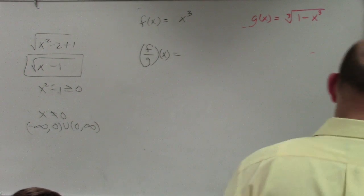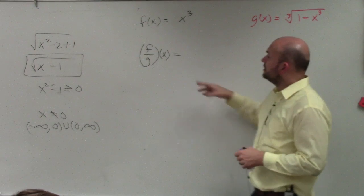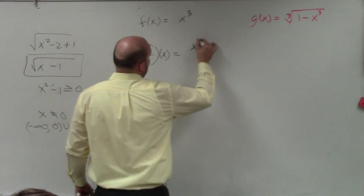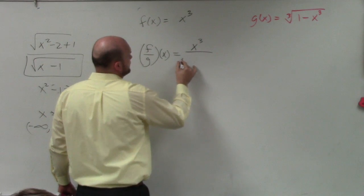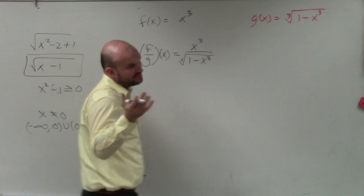I mentioned with you guys that it's impossible for us to go over each and every type of function that we can do. But basically, in this example, all they're asking you to do is divide. So you're going to have x cubed over the cube root of 1 minus x cubed. Well, that's really division. We can't really simplify this at all.